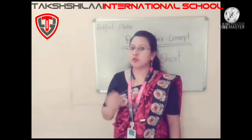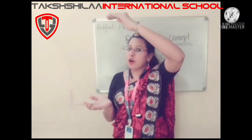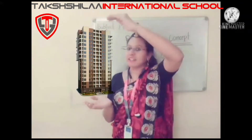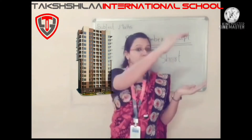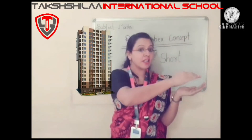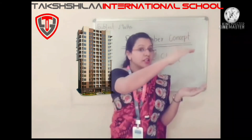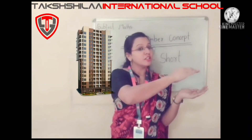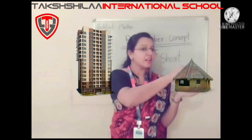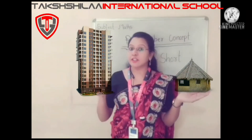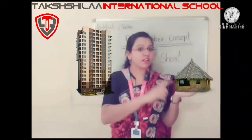Students, do you know? Things which are big toward the sky are called tall — like a building. And things which are small toward the sky are called short — like a hut. The building is taller than the hut, and the hut is shorter than the building.